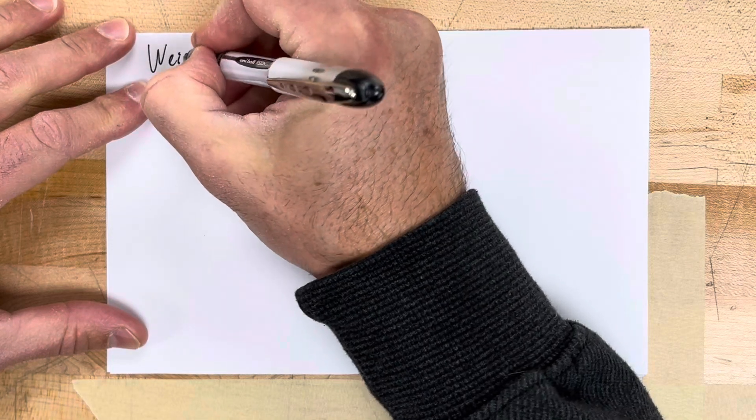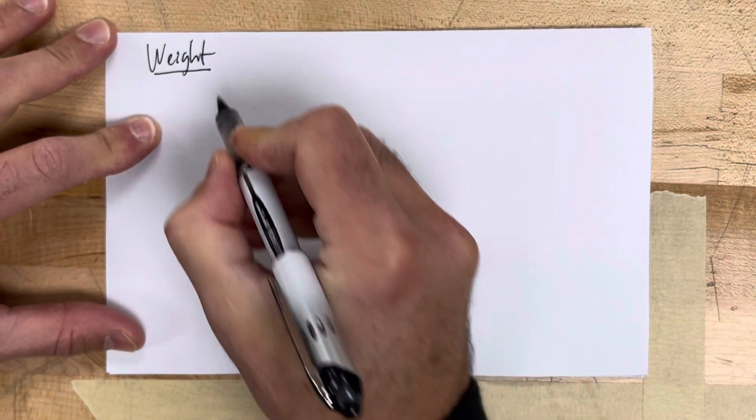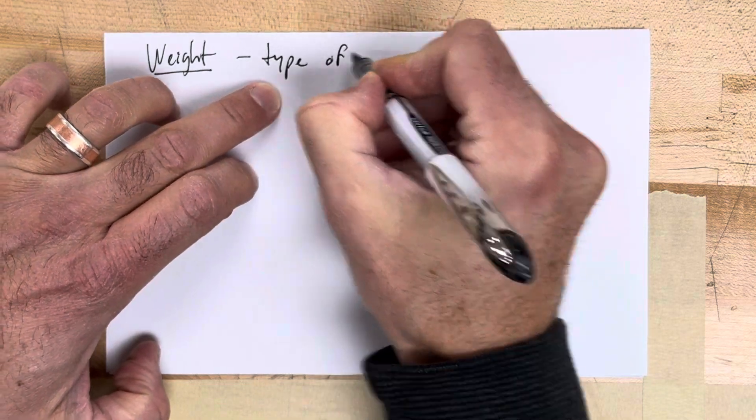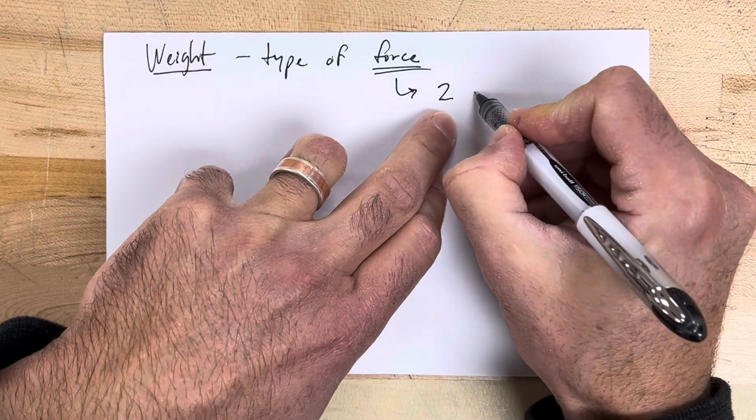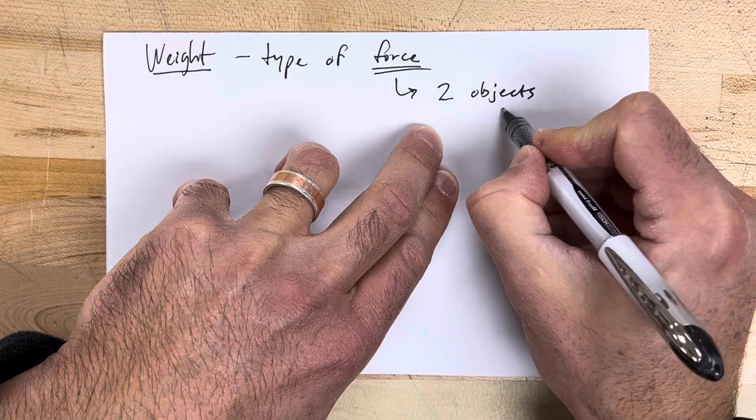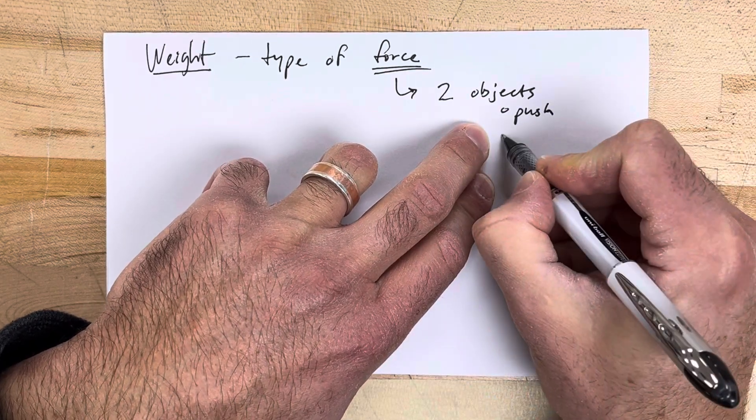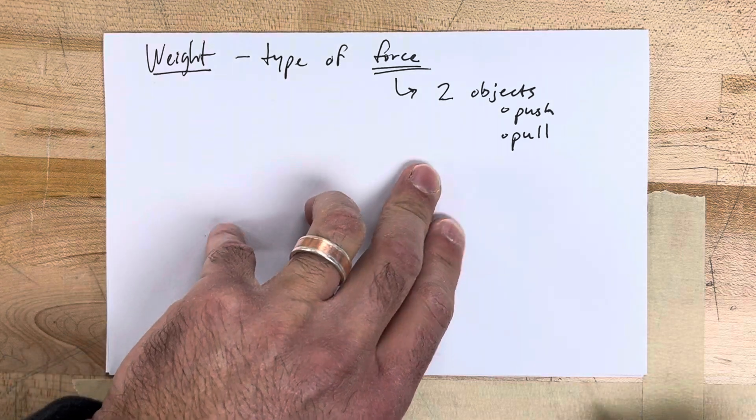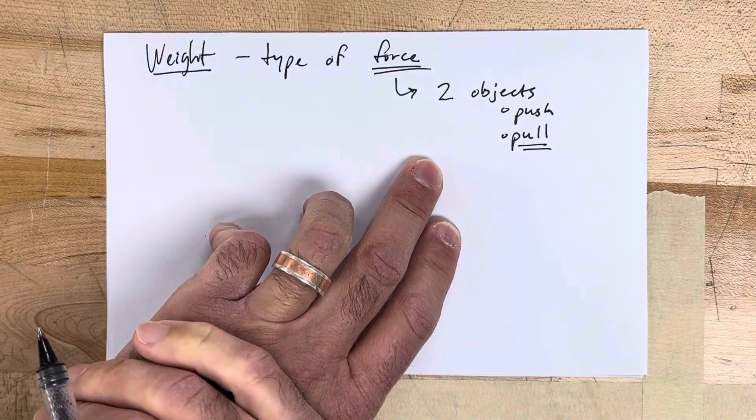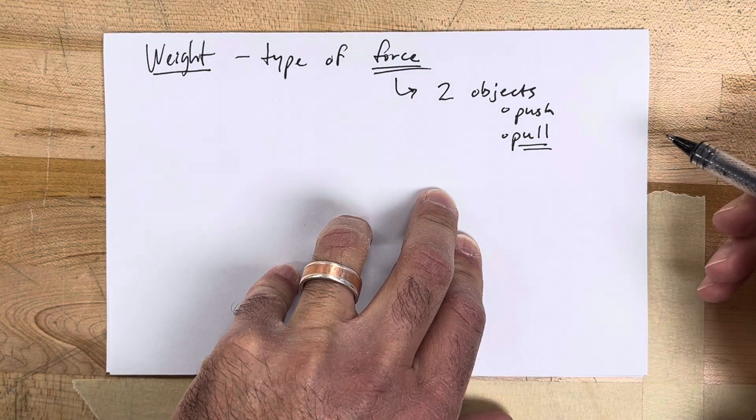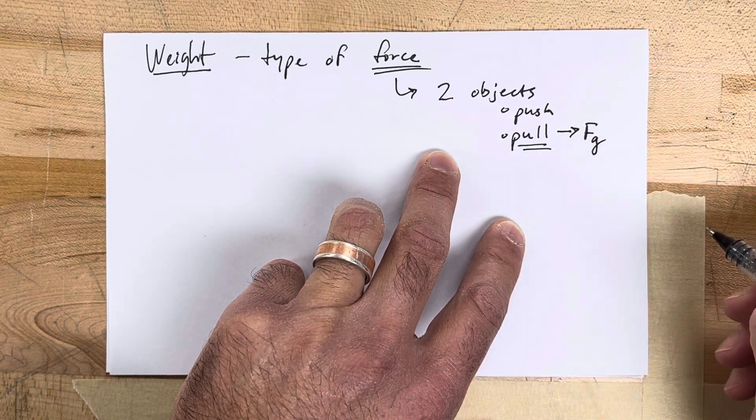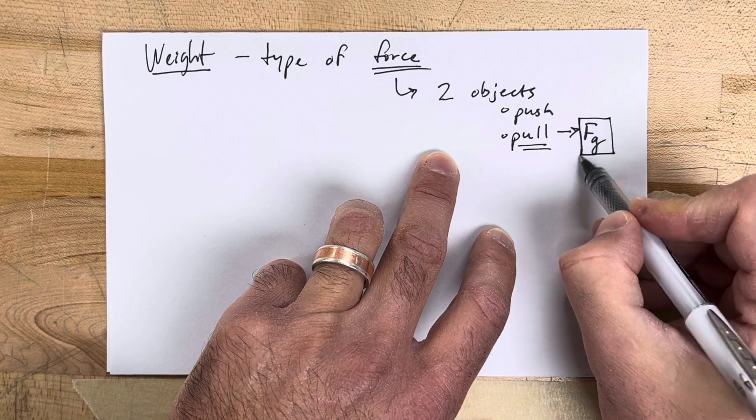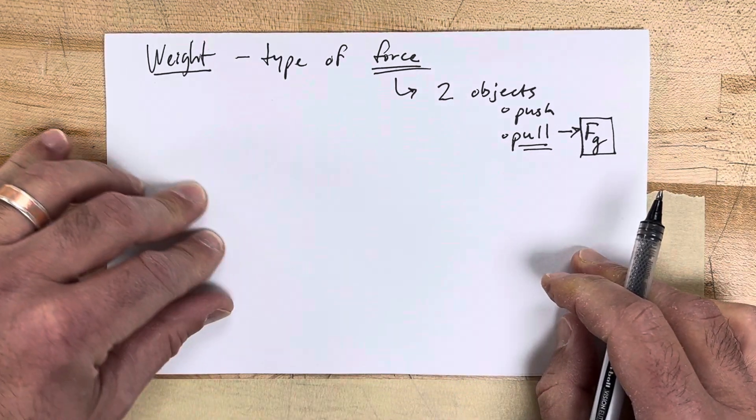This video is how to find weight. What is weight? Weight is a type of force. What is a force? A force is an interaction between two objects and it could be a push or it could be a pull. Most objects just push against each other, but there's a special pulling force and that is the force of gravity, which is what we use when we're finding the weight of an object.